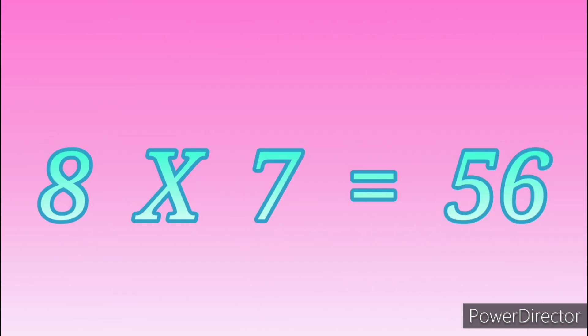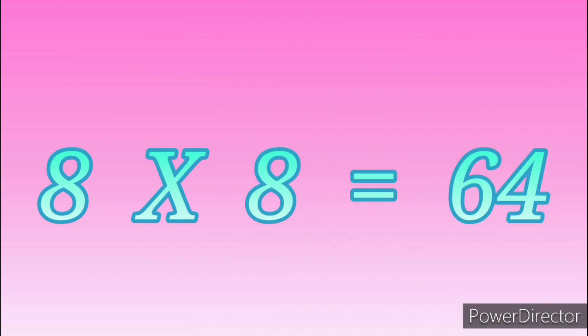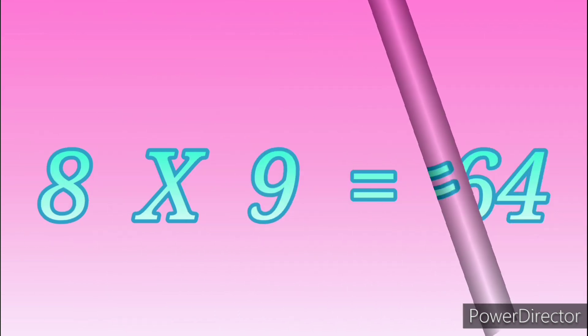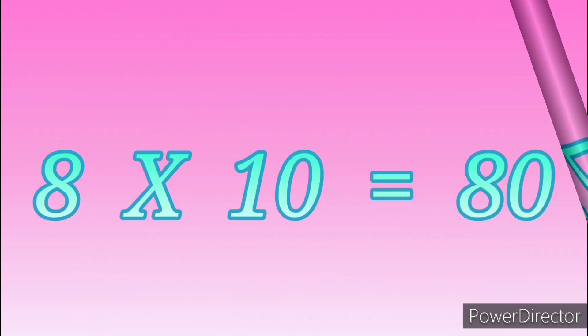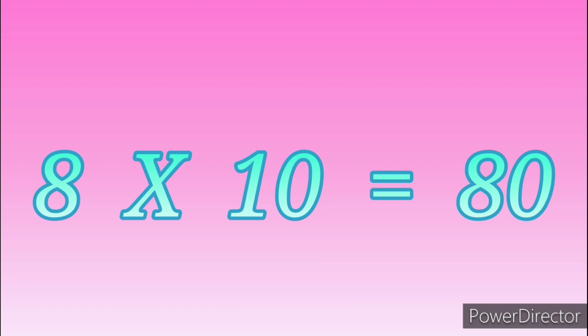Eight sevens are fifty-six. Eight eights are sixty-four. Eight nines are seventy-two. Eight tens are eighty.